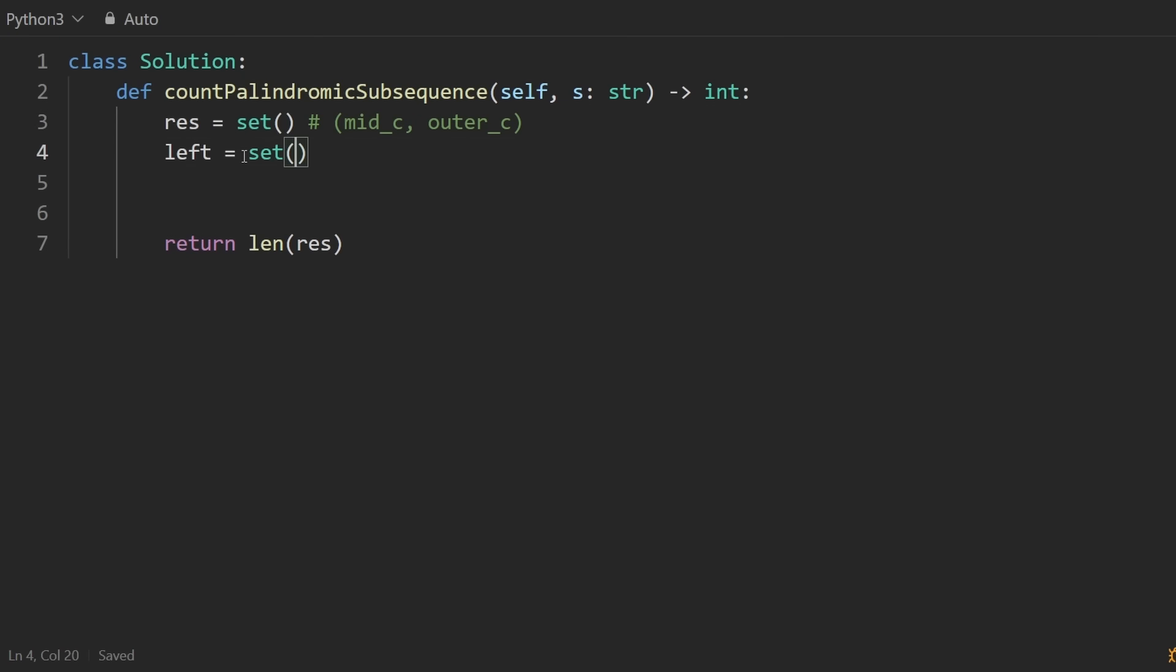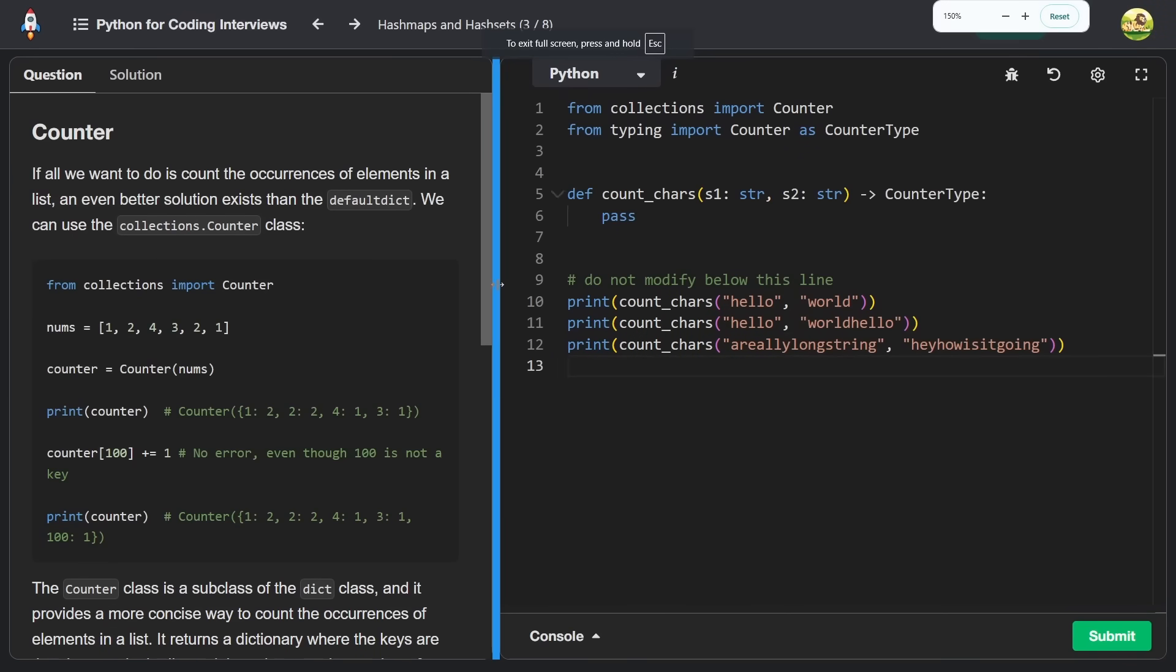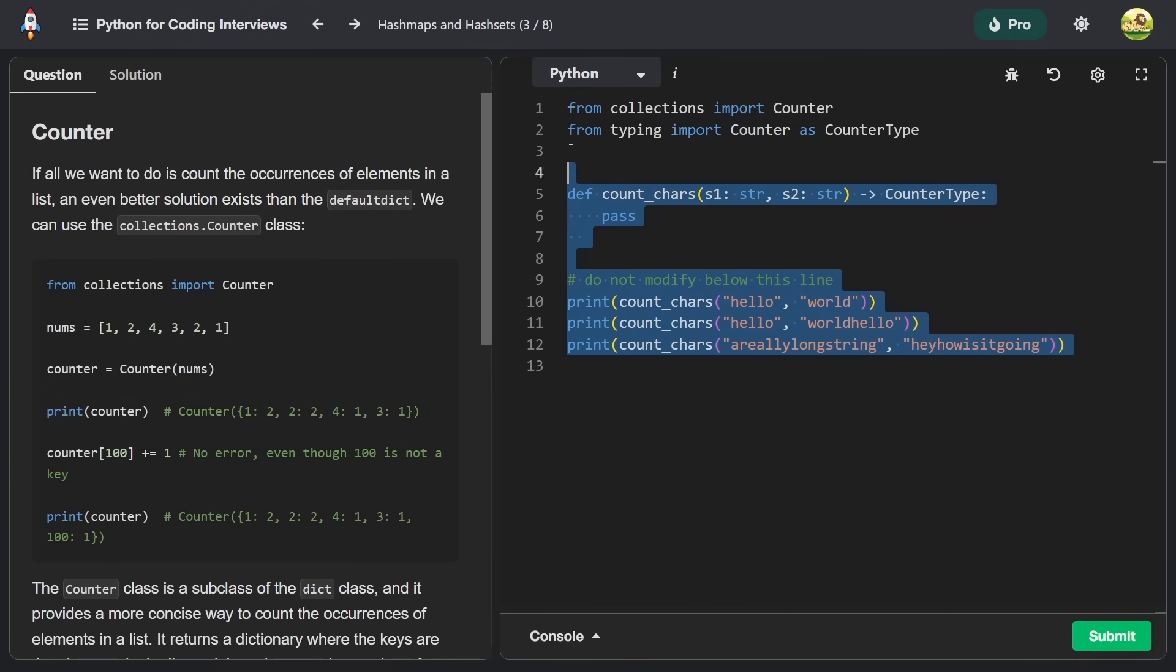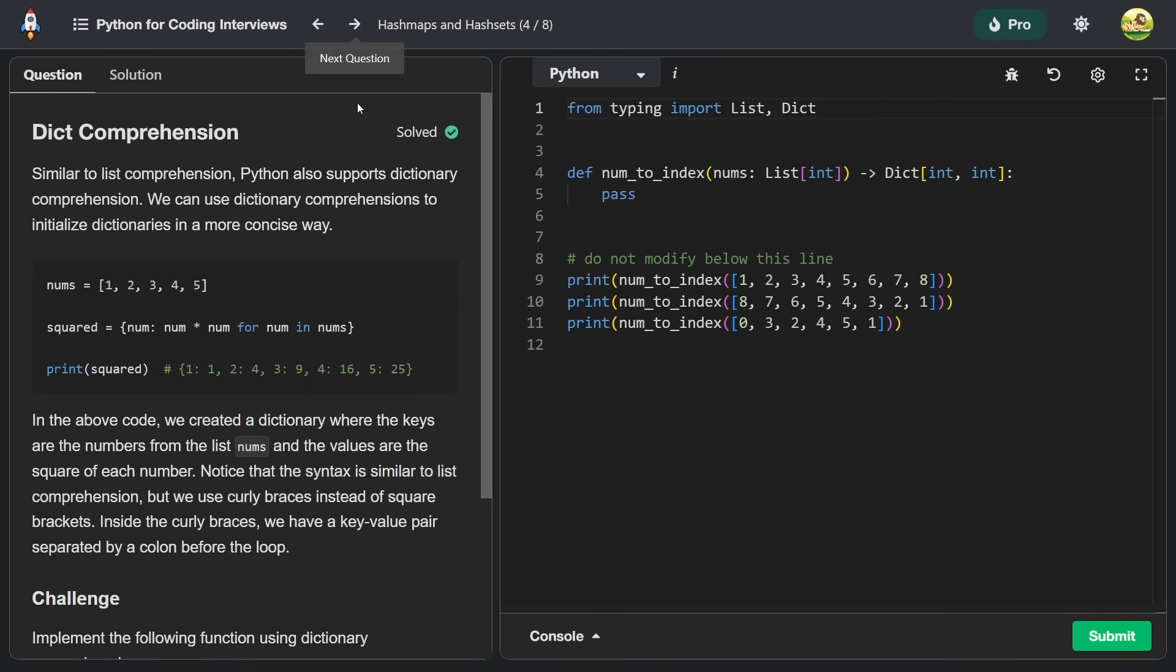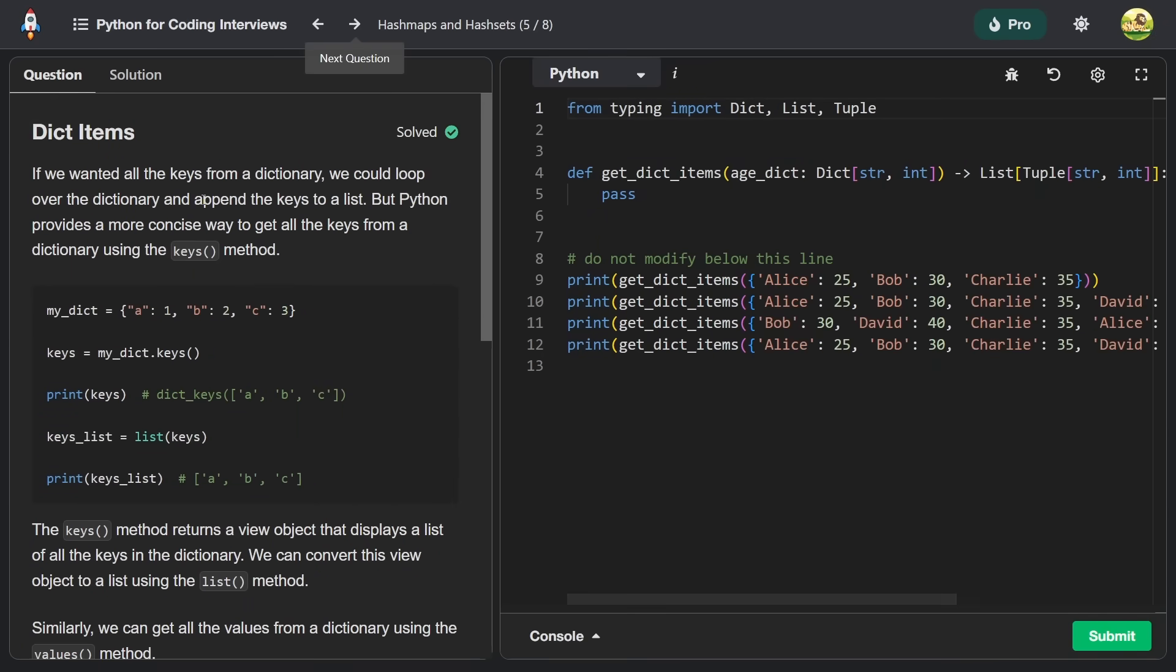Remember that we're going to have two data structures, a left data structure, which I'm going to make a set and a right data structure, which I'm going to make a hash map. But I'm not just going to use a regular hash map. I'm going to use a counter because Python makes our life so easy. If you don't know how counters work, I explain it pretty well, I think, in this lesson in my Python for Coding Reviews course.